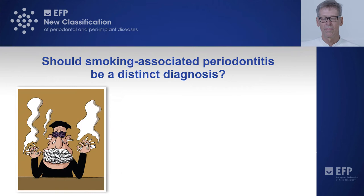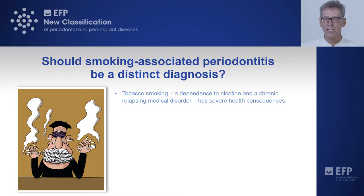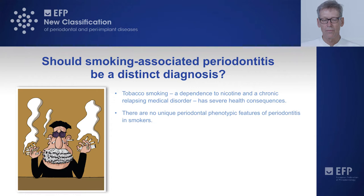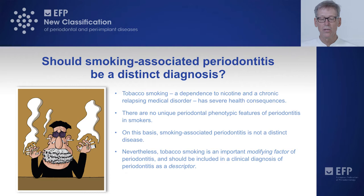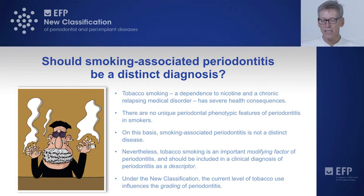Number four: should smoking-associated periodontitis be a distinct diagnosis? Tobacco smoking is now recognized as a dependence to nicotine — a chronic relapsing medical disorder. It's not just a behavioral factor, and it has severe health consequences. Again, there are no unique periodontal phenotypic features of periodontitis in smokers. Smoking-associated periodontitis is not a distinct diagnosis — this was the consensus. Nevertheless, smoking is an important modifying factor and should be included in the clinical diagnosis as a descriptor. The level of tobacco use at the time of diagnosis influences the grading of periodontitis.